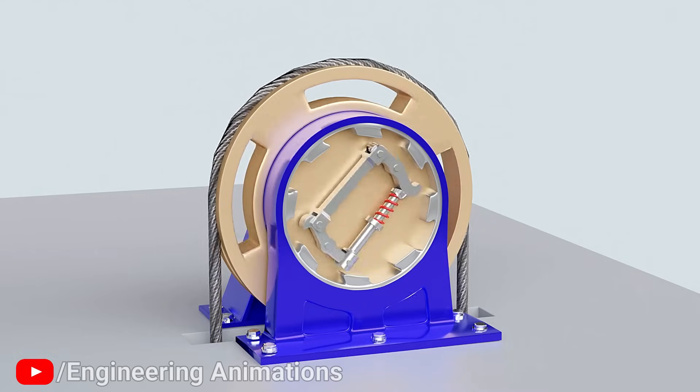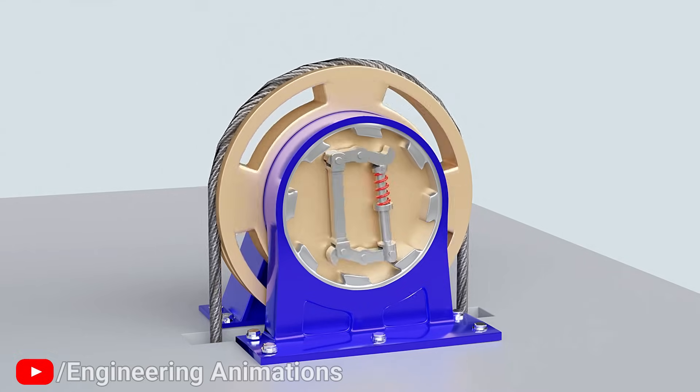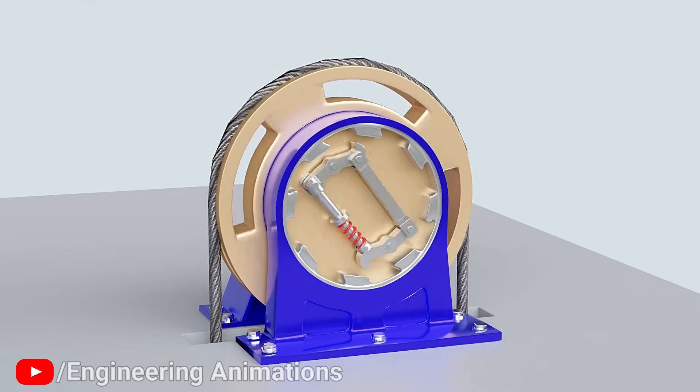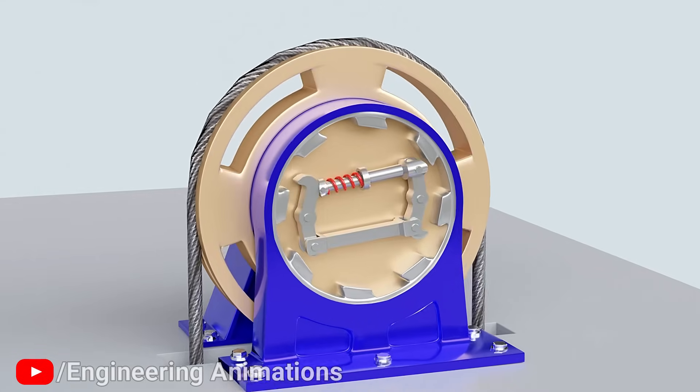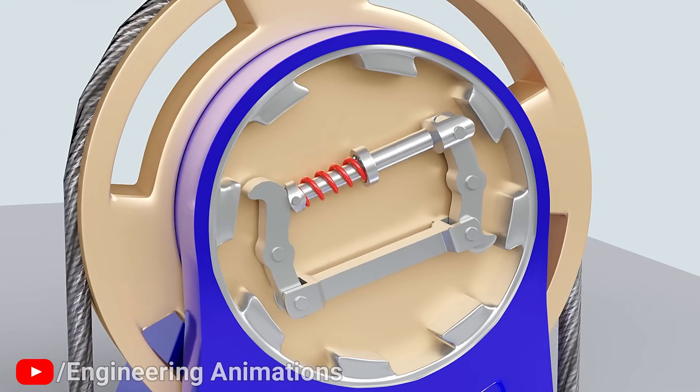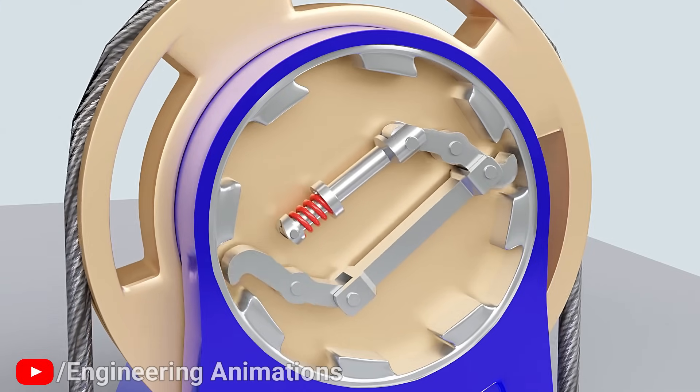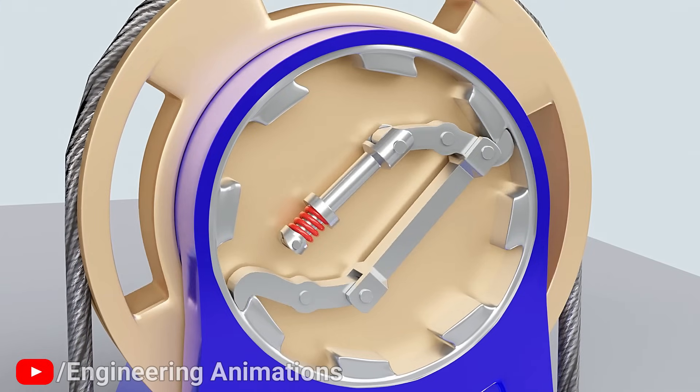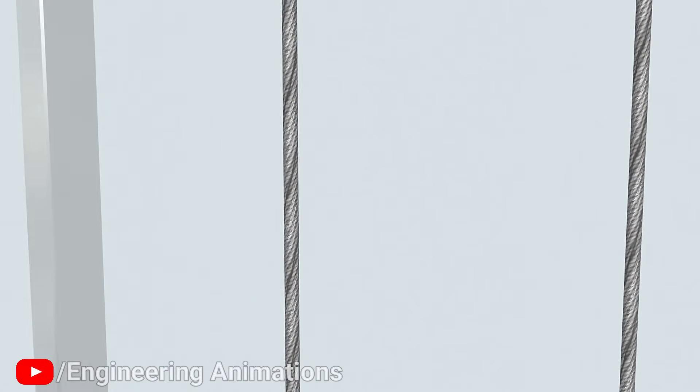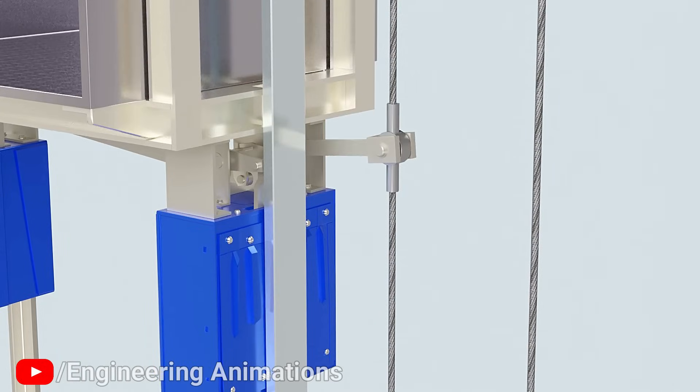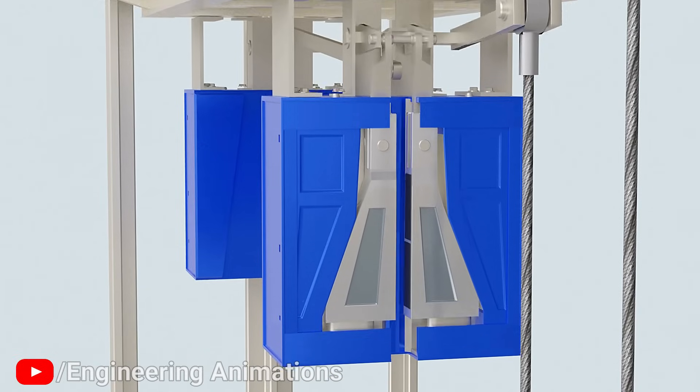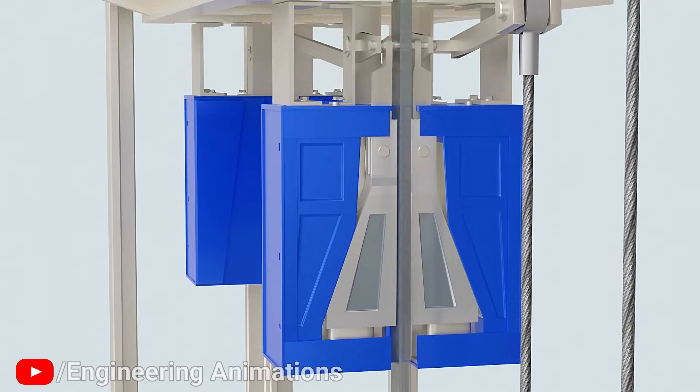But if the main cables snap, the car starts falling rapidly and causes the governor sheave to spin quickly. When the sheave exceeds rated speed, the arms fly out and lock with teeth in the stationary casing. This suddenly stops the sheave and cable. As the cable stops, the brake lever is pulled upwards. This pulls the two wedged brakes and clamps them upon the guide rails. This wedged system of brakes is very powerful and prevents the car from falling.